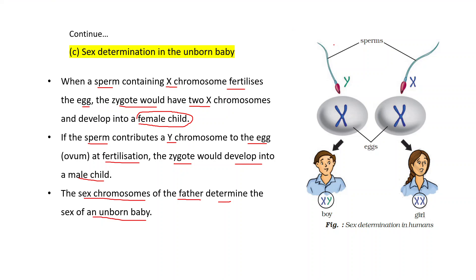Also draw this diagram: sperm containing Y chromosome and sperm containing X chromosome. When the sperm containing Y chromosome combines with the egg containing X chromosome, this results in the combination XY — that is, a boy is developed.